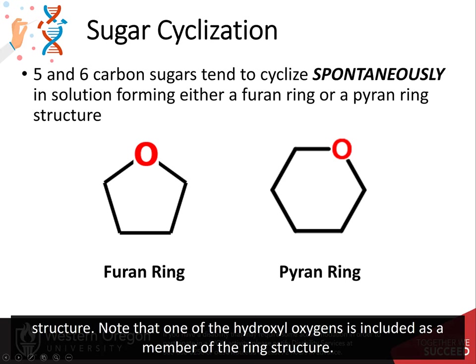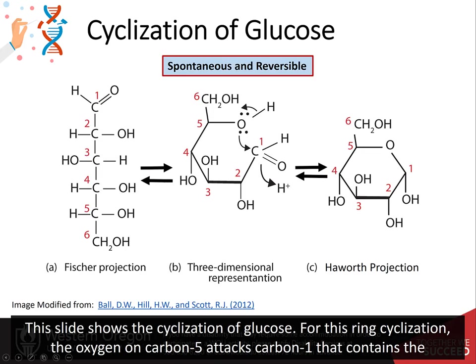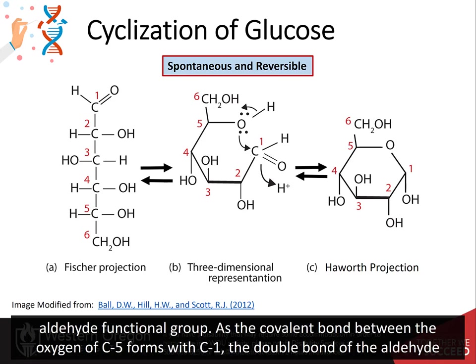Note that one of the hydroxyl oxygens is included as a member of the ring structure. This slide shows the cyclization of glucose. For this ring cyclization, the oxygen located on carbon 5 attacks carbon 1, which contains the aldehyde functional group.